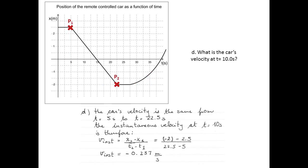Next, we find the car's velocity at 10 seconds. From 5 seconds to 22.5 seconds, the car's velocity is the same because the slope of the position-time graph is constant. So it makes sense to calculate the velocity between 5 and 22.5 seconds — the instantaneous velocity is given by the slope of the graph. Taking x2 as negative 2 meters at 22.5 seconds, and the initial position as minus 2.5 meters at 5 seconds, the instantaneous velocity is minus 0.257 meters per second.